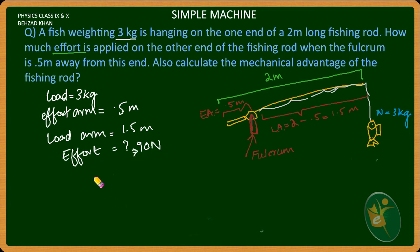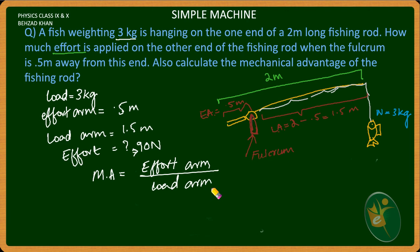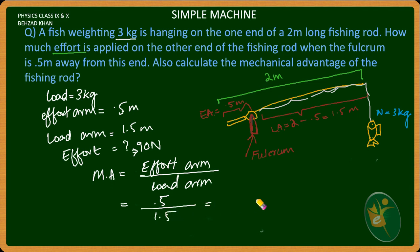Also calculate the mechanical advantage. The mechanical advantage equals the effort arm divided by the load arm. The effort arm is 1.5 meters and the load arm is 0.5 meters. Dividing 1.5 by 0.5 gives a mechanical advantage of 3.